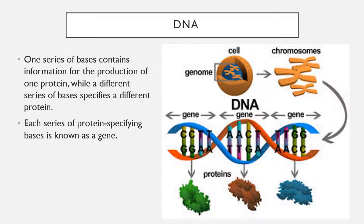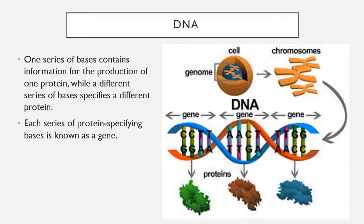Your body will go along and start reading your DNA. As it reads the DNA, it gets to a certain spot where it has finished reading a segment of DNA, and that segment has told your body to make a protein. This certain code tells your body to make a specific protein. The segment of DNA that codes for one protein is called a gene.